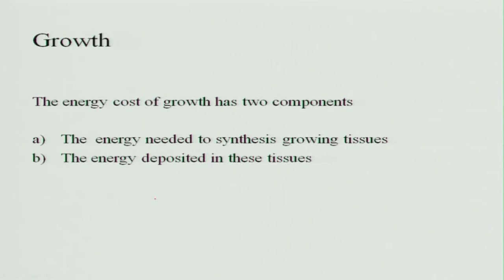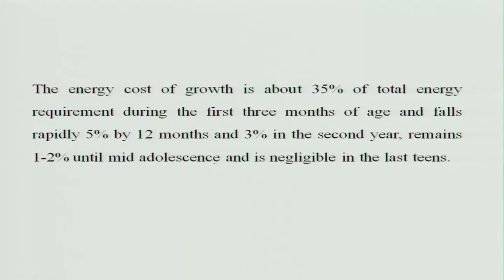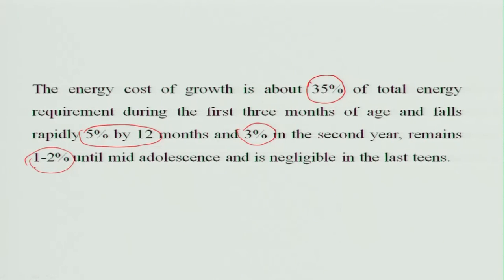The energy cost of growth has two components: the energy needed to synthesize the growing tissues and the energy deposited in those tissues. The energy cost of growth is about 35 percent of total energy requirement during the first three months of age, as growth is very high during infancy. It gradually falls to 5 percent by 12 months of age, 3 percent in the second year, 1 to 2 percent in mid-adolescence, and is negligible in late teens and adulthood.